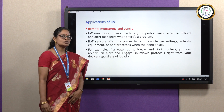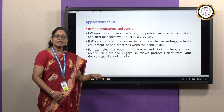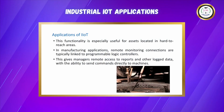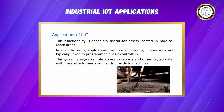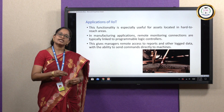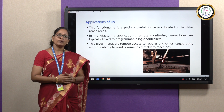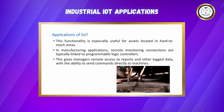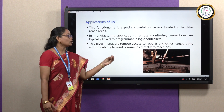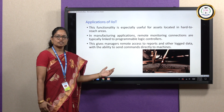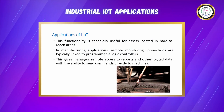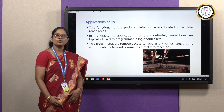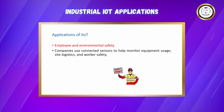For example, if a water pump breaks and starts to leak, you can receive an alert and immediately the shut-off protocols can be engaged right from your device, regardless of your location. This functionality is useful for assets located in hard-to-reach areas where it is impossible or time-consuming and expensive to send a technician. Industrial IoT is also applied in manufacturing applications — remote monitoring connections are linked to programmable logic controllers, giving managers remote access to reports, log data, along with the ability to send commands to machines or further instructions to human operators.